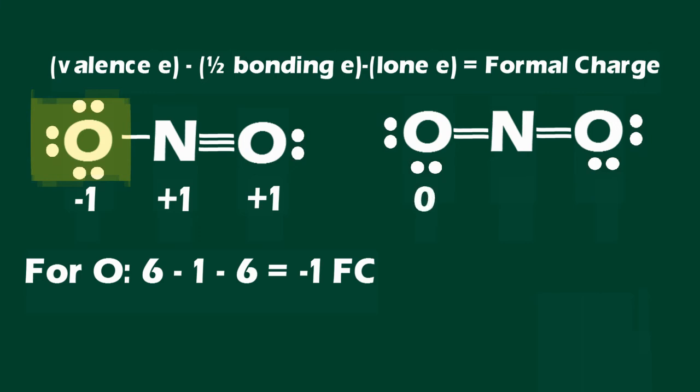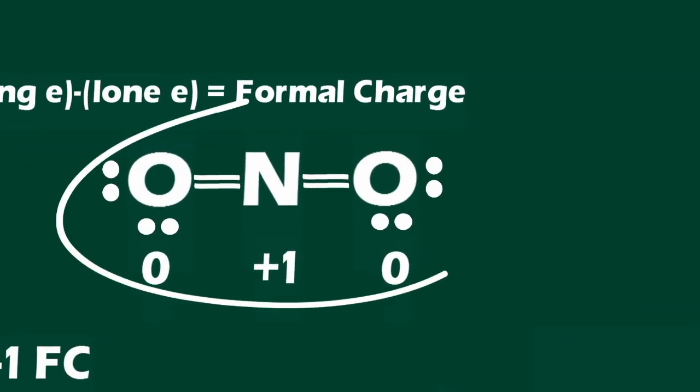The second Lewis structure has two doubly bonded oxygens to the nitrogen. The formal charges for the first nitronium structure are negative one on the singly bonded oxygen and positive one on both the nitrogen and the triply bonded oxygen. The second Lewis structure has formal charges of zero on both doubly bonded oxygens and positive one on the nitrogen. This lower formal charge makes the second Lewis structure the correct one.